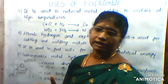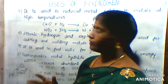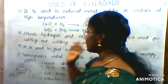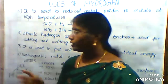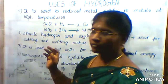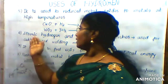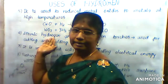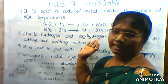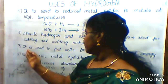Atomic hydrogen torches are used to cut and weld metals. Atomic hydrogen and oxy-hydrogen torches are used in metal cutting and welding applications.